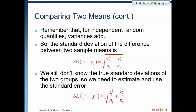We need to take information about standard deviations from Chapter 23 and make it work for a difference. For independent random quantities, we always add the variances. Last chapter when we looked at the standard error for a mean, we were looking at the sample standard deviation over the square root of n. But if we are comparing the difference, we need to add the variances, and that's the result we get — we square it, then square root it.